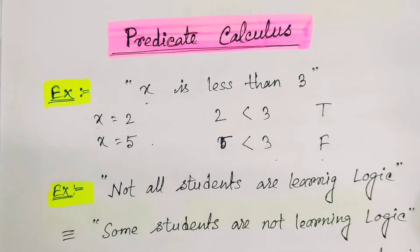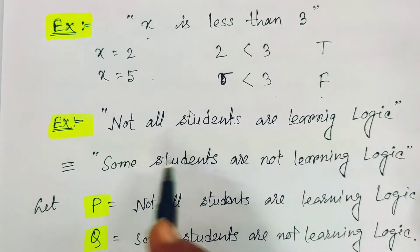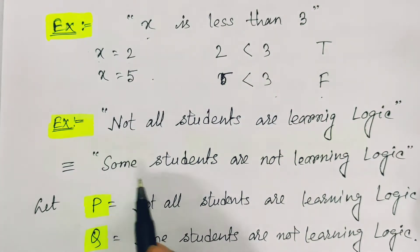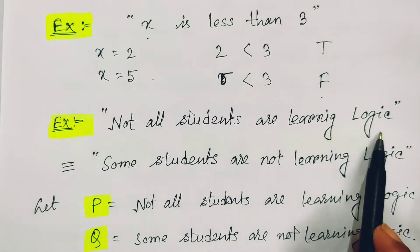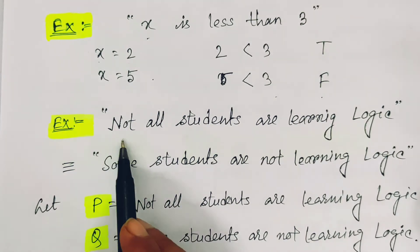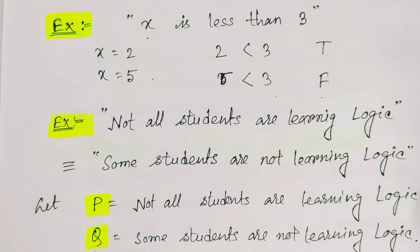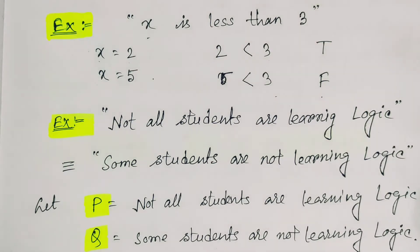Propositional logic also cannot be used for patterns involving logical equivalence. Suppose another example is given: 'Not all students are learning logic.' We can write this the same as 'Some students are not learning logic.' Now if we denote the first statement by P and the second by Q, there is no mechanism in propositional logic to determine whether P and Q are equivalent.